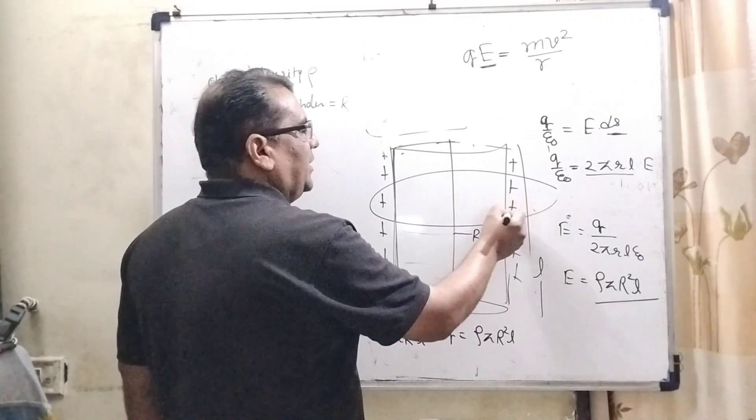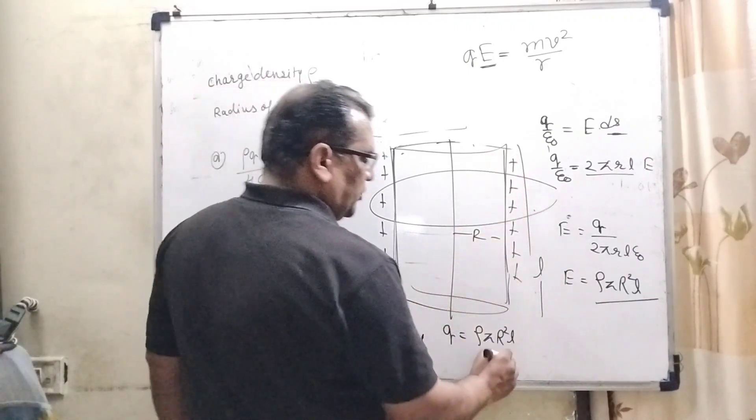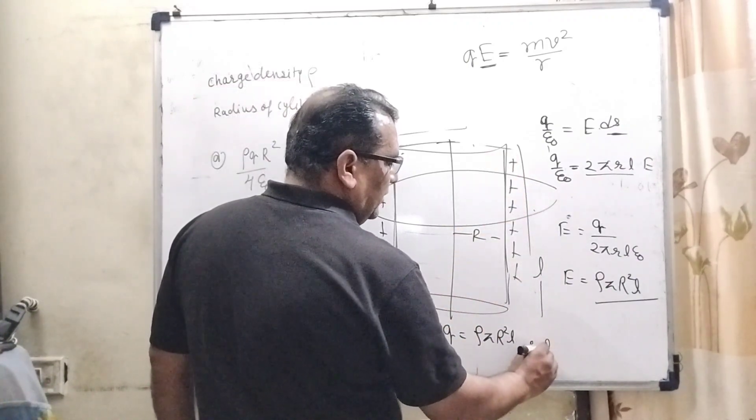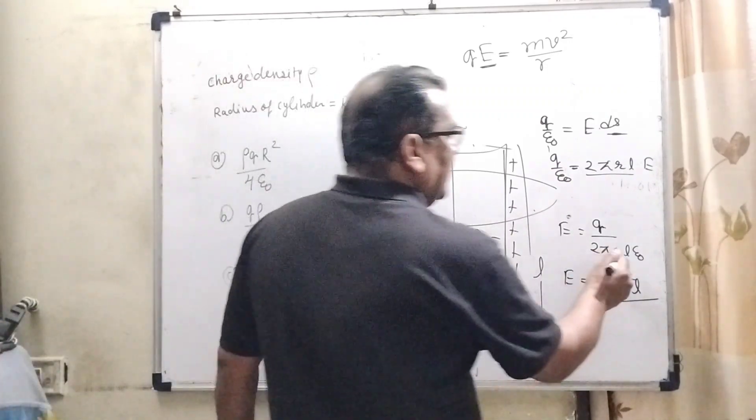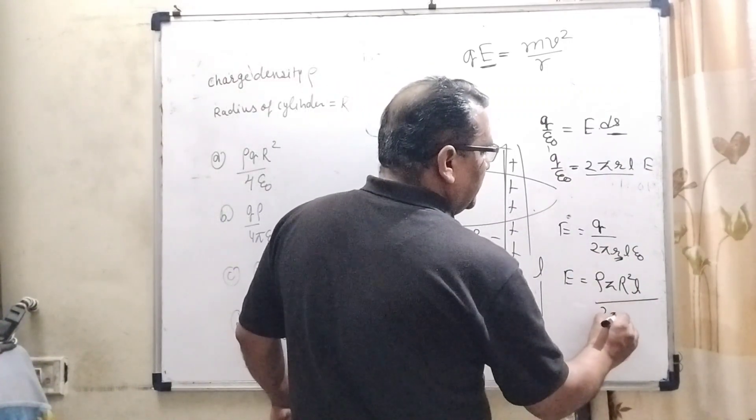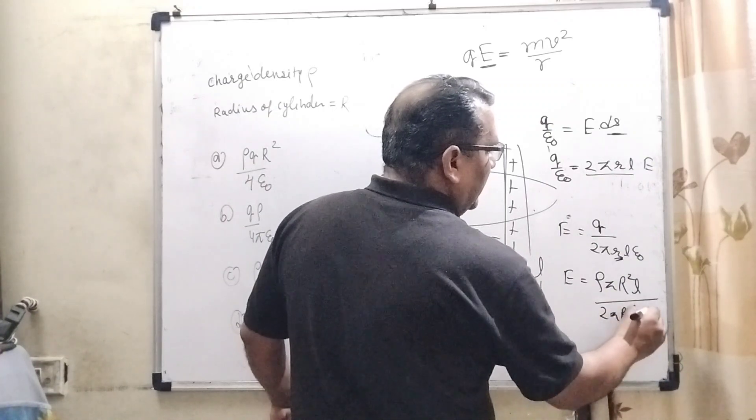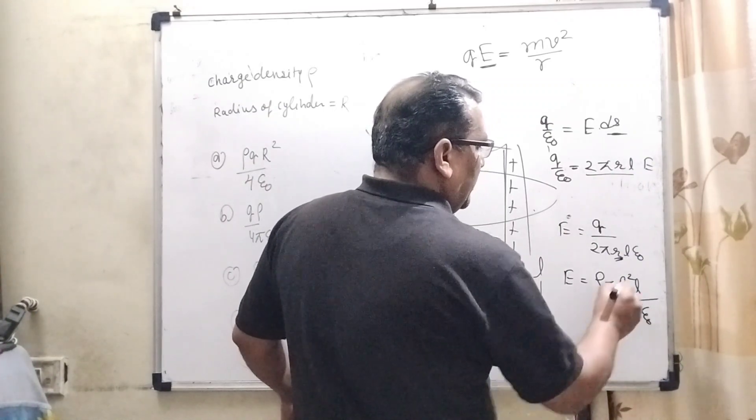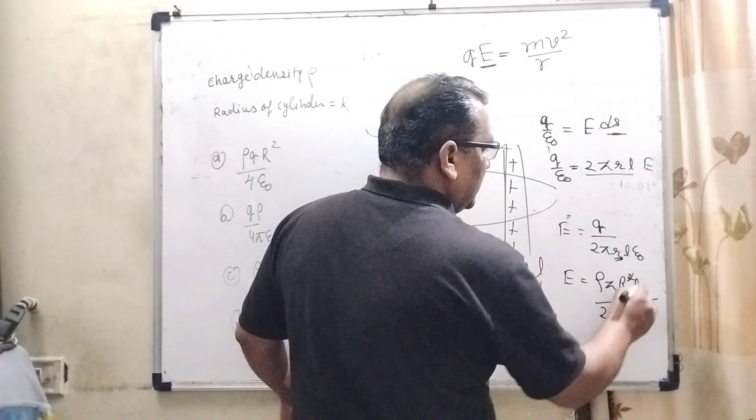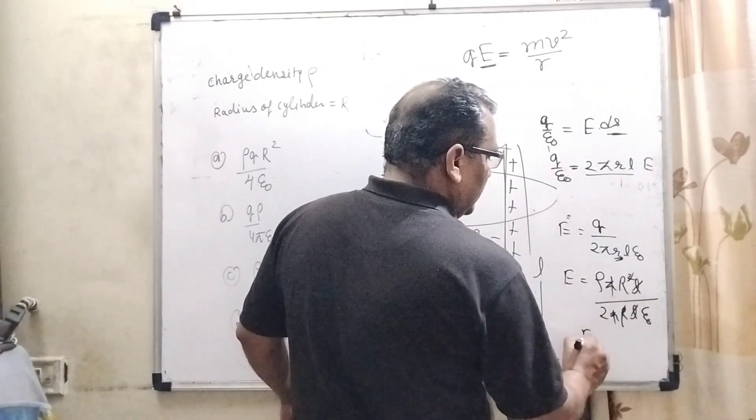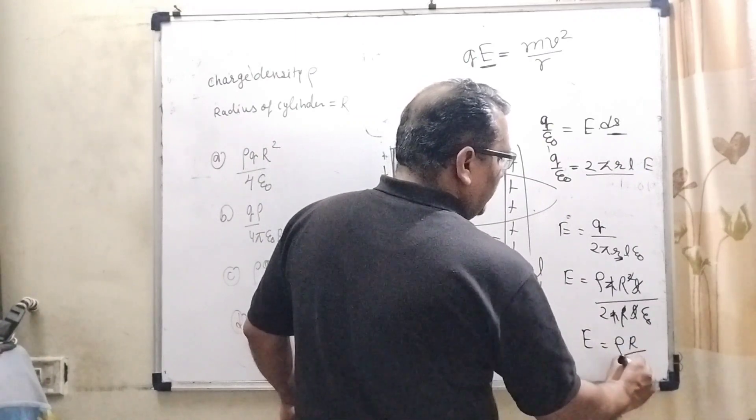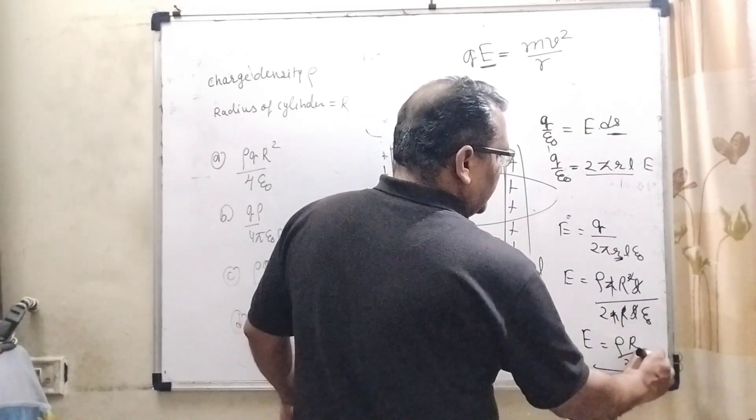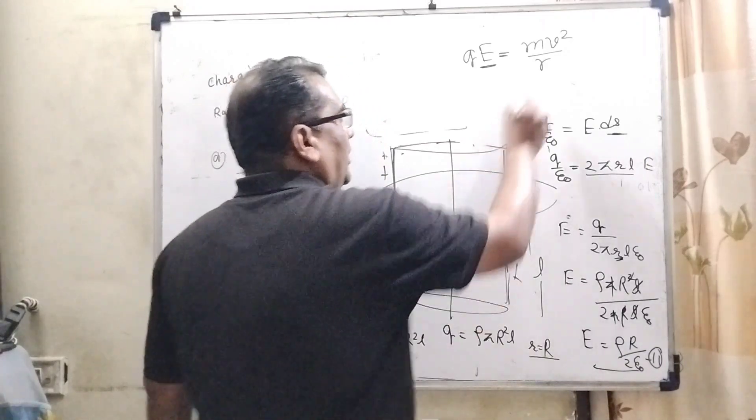So in the place of small r, we substitute capital R. Then E = ρπR²L/2πRLε₀. So here, one R cancels out, L cancels out, π cancels out. Then E = ρR/2ε₀, equation number second.